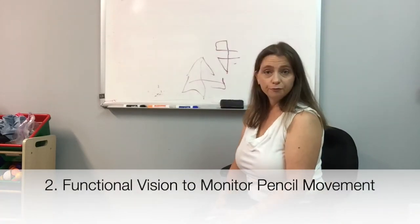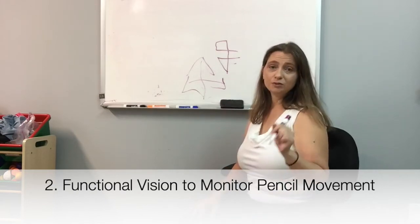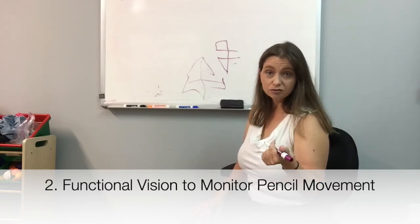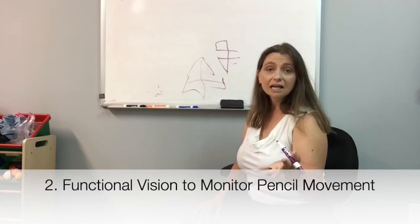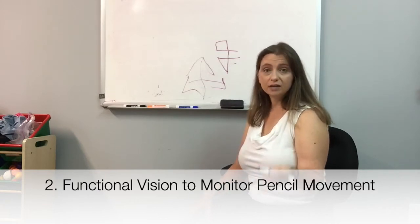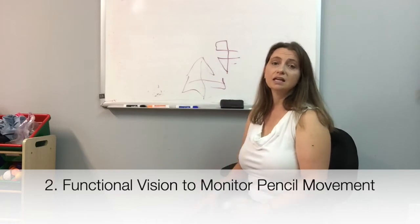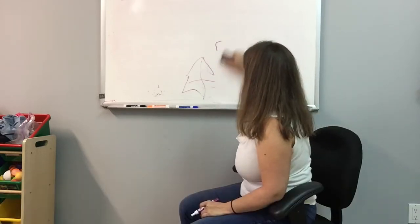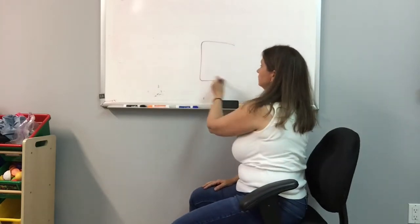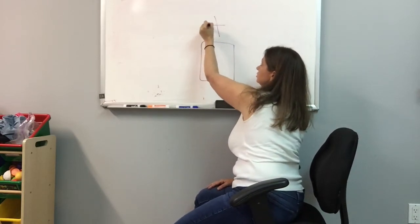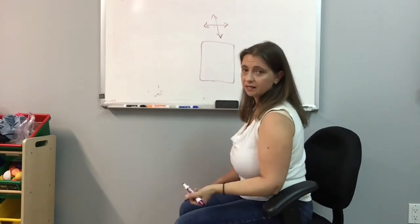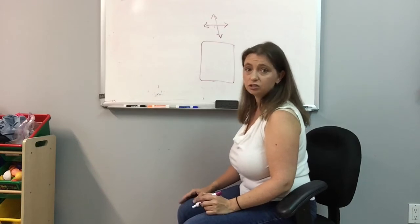Number two, vision. If I do not use my eyes successfully to guide what my hand is doing, the chances of me getting the size right, the chances of me getting it inside the lines and successfully and legibly completing the written work or even the design copying is going to be compromised. So on a visual motor test, this might look like a child who is supposed to be copying something in the box. Let's just use this for ease. They're supposed to be copying this shape into the box and they don't really use their vision to monitor what they're doing.